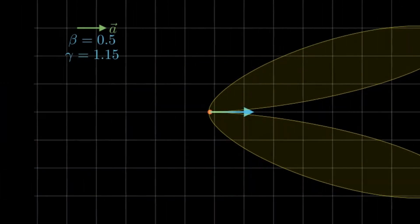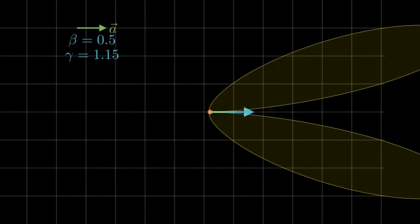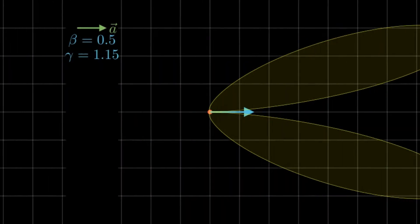Here I've set beta to 0.5, that is one half of the speed of light, and you can see this beaming effect quite clearly.